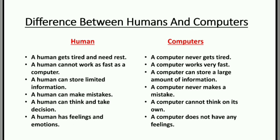The differences between humans and computers: The human gets tired and needs rest — a computer never gets tired. A human cannot work as fast as a computer — a computer works very fast. A human can store limited information — a computer can store a large amount of information. A human can make mistakes — a computer never makes mistakes.